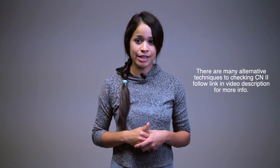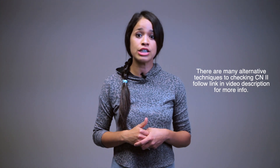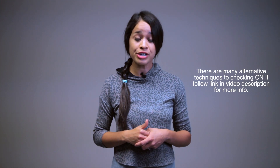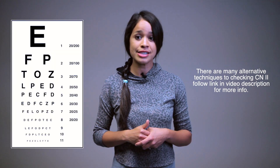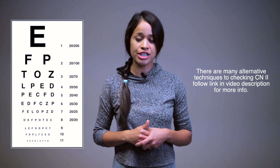For cranial nerve 2, it's your optic nerve, which controls your sensory and your vision. You can check with a Snellen chart. For cranial nerves 3, 4, and 6, they are always checked together — I remember it as an address like 346.